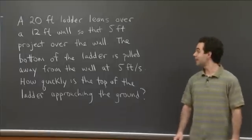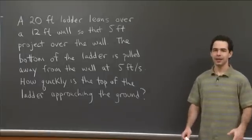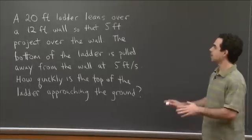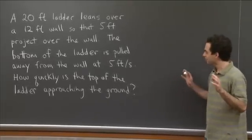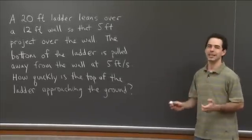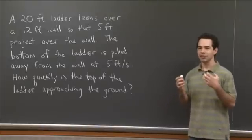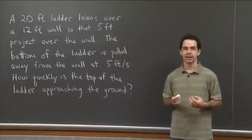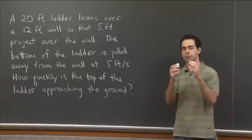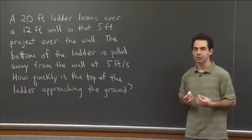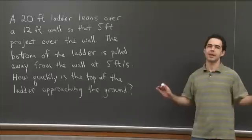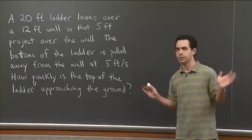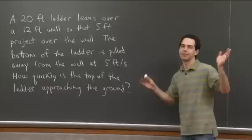All right, so hopefully you've had some luck working out this problem on your own. Now let's work it out together. This is a sort of classic, really tricky related rates problem in that there's a lot of geometric work that you have to do at the beginning in order to get this right. And then once you get the geometry down, the calculus is basically totally straightforward — you compute a couple of derivatives, you use the chain rule once, whatever.